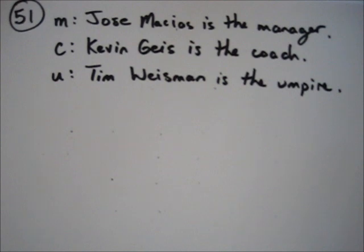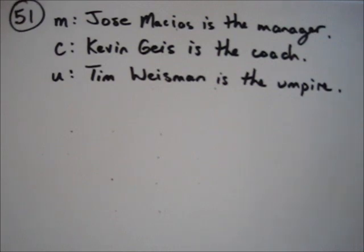The statement in the book reads: if Jose Macias is the manager, then Kevin Geis is the coach. If Kevin Geis is the coach, then Tim Wiseman is the umpire. Therefore, if Jose Macias is the manager, then Tim Wiseman is the umpire.